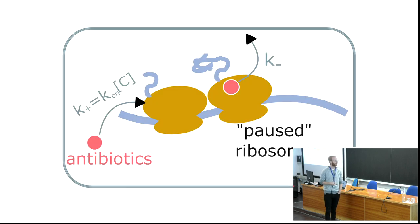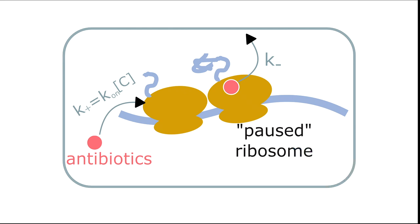The general idea of our model is that you can have antibiotics that bind with a certain rate K+ to the ribosome, and then the ribosome enters a pause state. Once it's paused, it unbinds with rate K-, which then it resumes elongation. This type of model has been mainly used to study RNAPs and transcription because RNA polymerases have been known to pause sometimes.